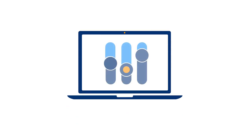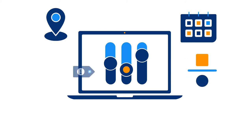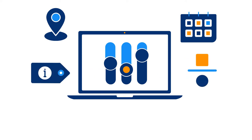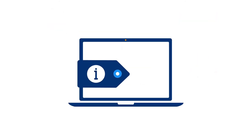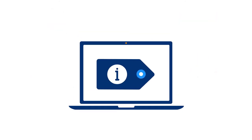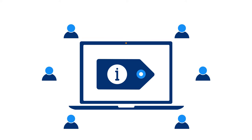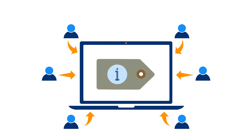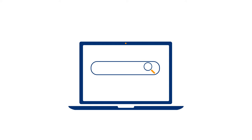Creating new metadata in DHIS2 is often a straightforward process that can be done quickly via the user interface. However, one of the challenges of setting up a functional DHIS2 system is that many people can potentially contribute to it by adding or modifying these metadata. Without close coordination between those users, we can end up with a system that is difficult to navigate and where it is hard to find what you need.